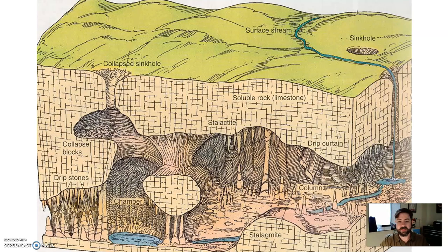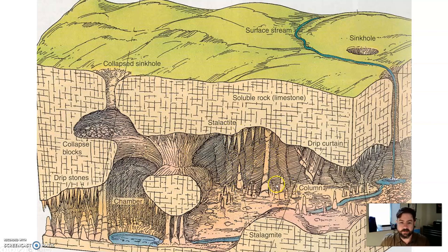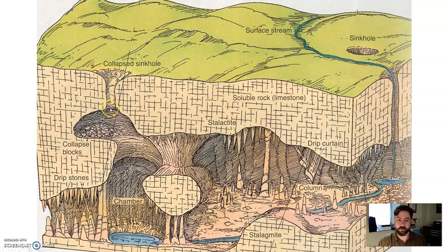Here you see a cavern because it has all these stalactites and stalagmites. Sometimes they grow big enough from the ceiling and the floor to connect and create a column. Caverns you typically only find in soluble rock — dissolvable rock like limestone. A sinkhole is created at the surface because something below ground fell in and ate its way through, giving you a sinkhole to the underground.